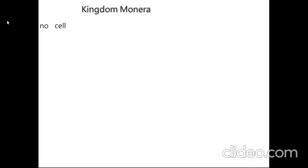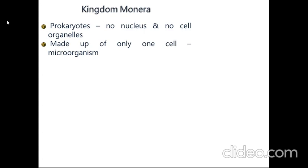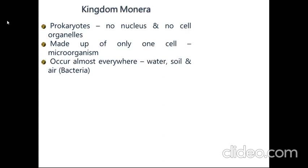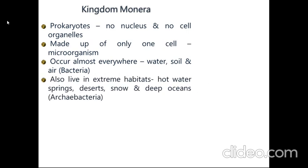Now we will see the kingdom Monera. They are prokaryotes with no nucleus and no cell organelles. They are made up of only one cell, so they are microorganisms. We cannot see them without the help of a microscope. They occur almost everywhere: water, soil, and air. They are bacteria. They also live in extreme habitats like hot water springs, deserts, snow, and deep oceans. These are archaebacteria, or ancient bacteria.